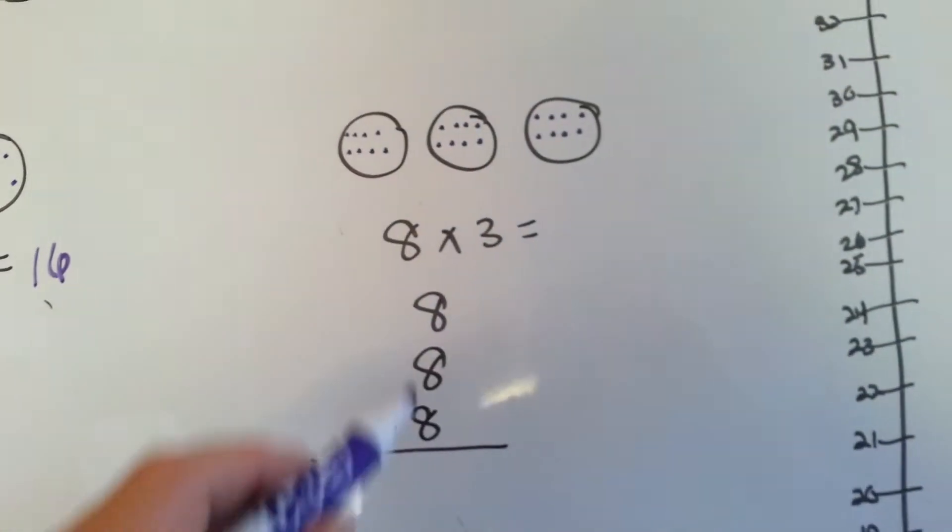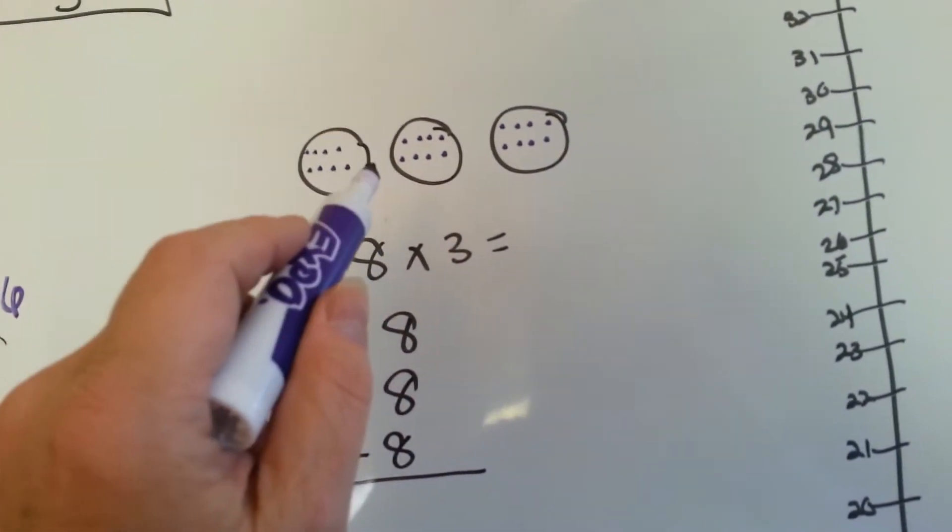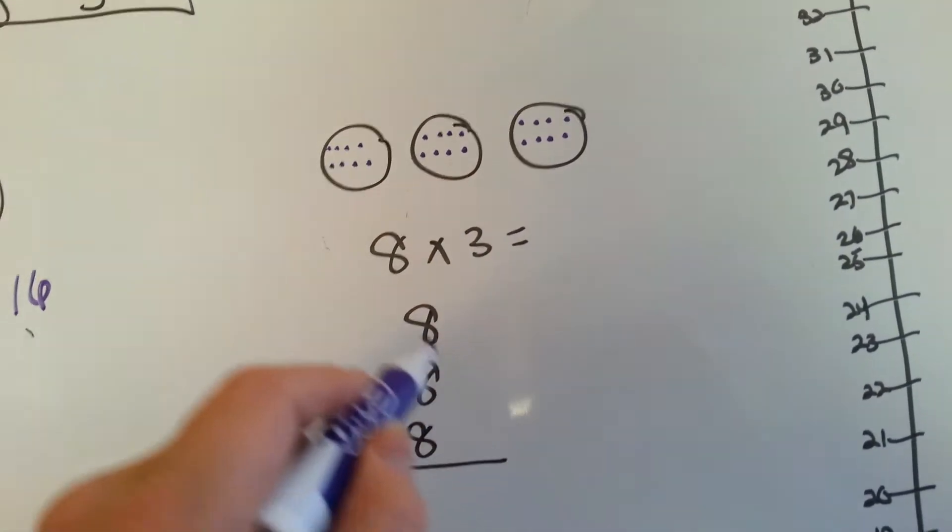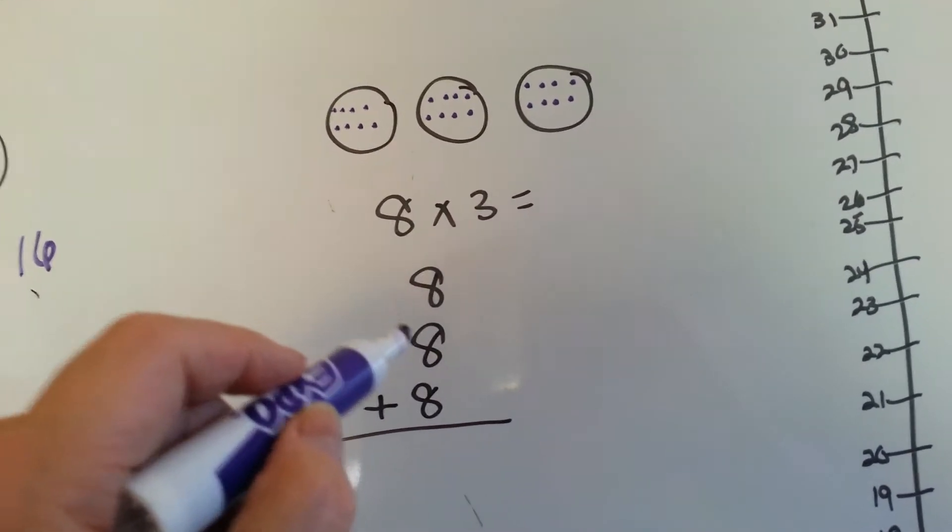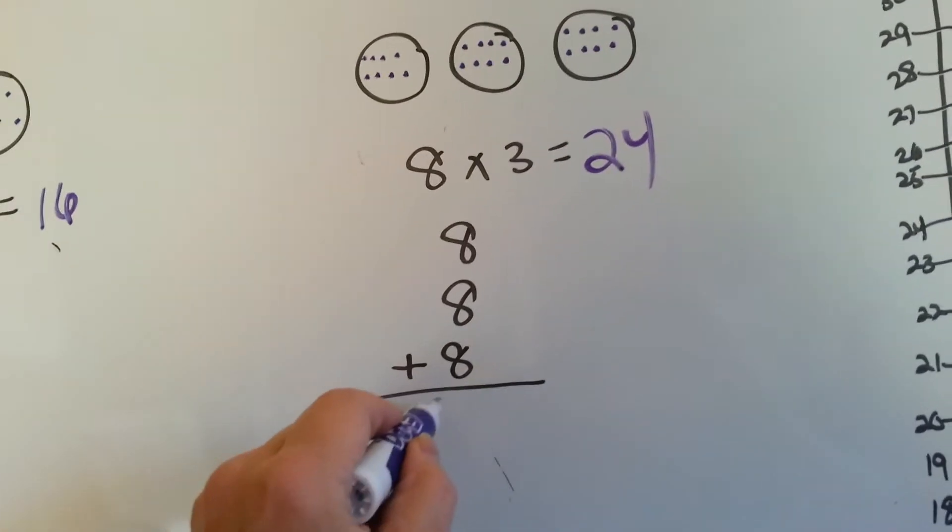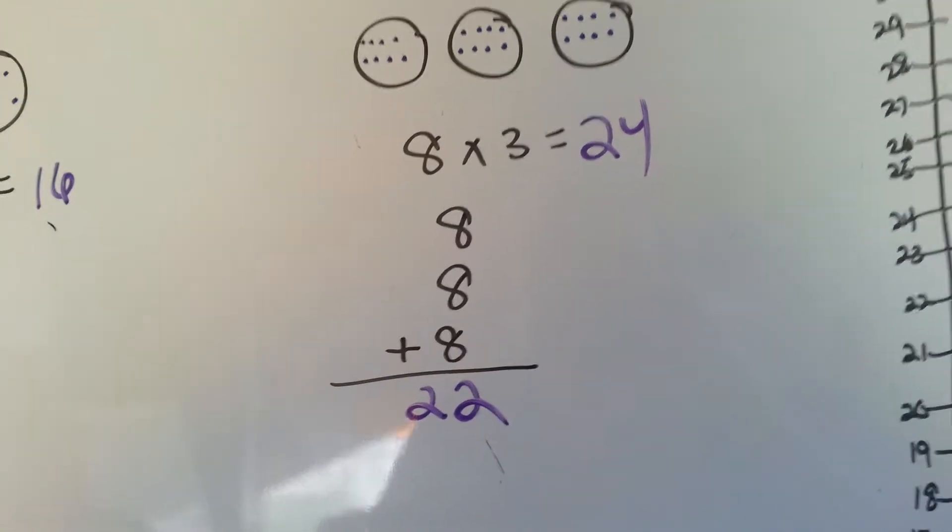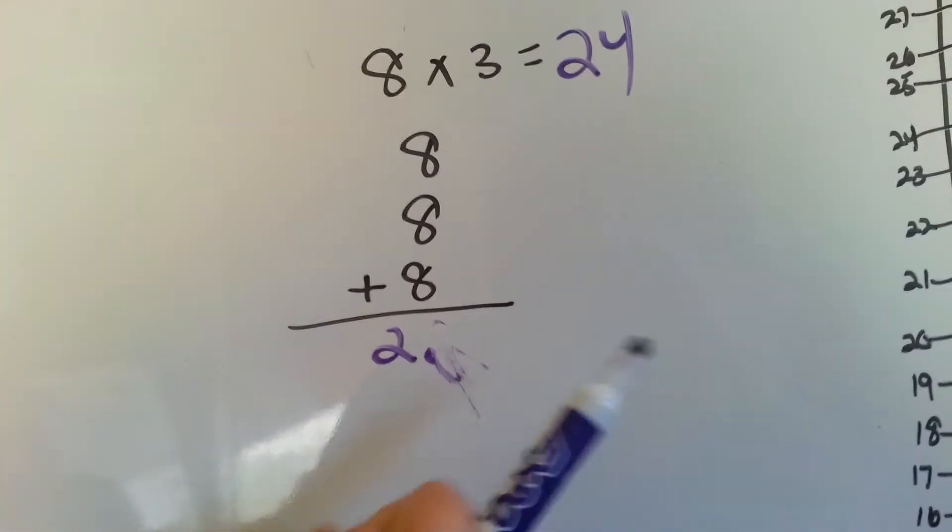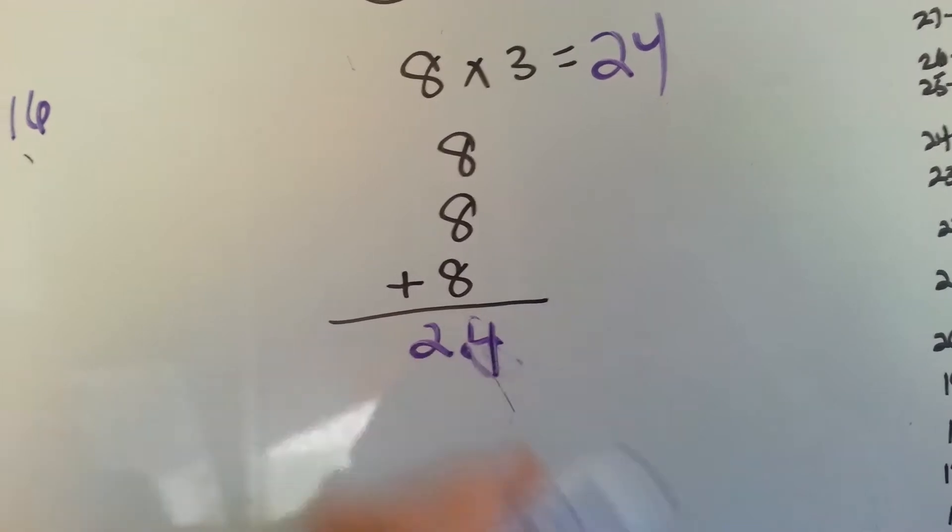Let's look at this one. Eight times three is like saying you have an eight three times. One, two, three. It's the same thing as eight plus eight plus eight. Eight times three is twenty-four.